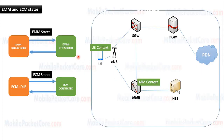EMM state of the UE describes the state of the UE if it is registered to the network or not. While the ECM state of the UE describes the state of the UE if it is connected to the network or not connected to the network. The state of every UE is stored in the EMM context of this UE that exists on the MME and on the UE context that exists on the UE.